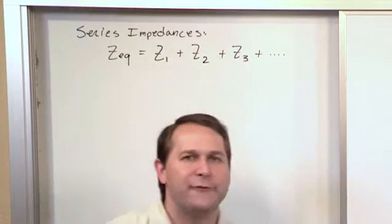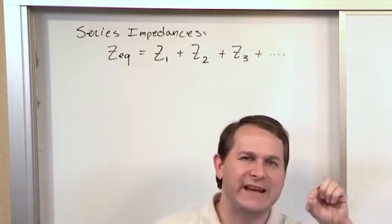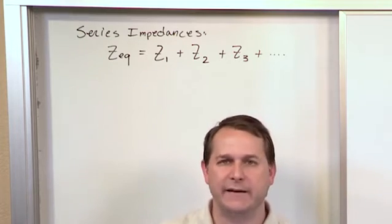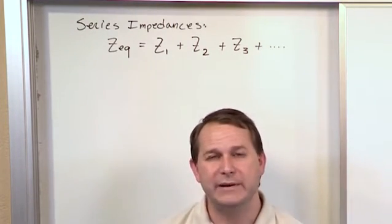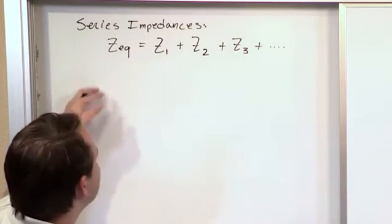This is exactly what we have for resistors. If you have resistors end-to-end in series, you just add them up, and so we have exactly the same analog once we understand this impedance concept. You can see why everything looks so familiar.